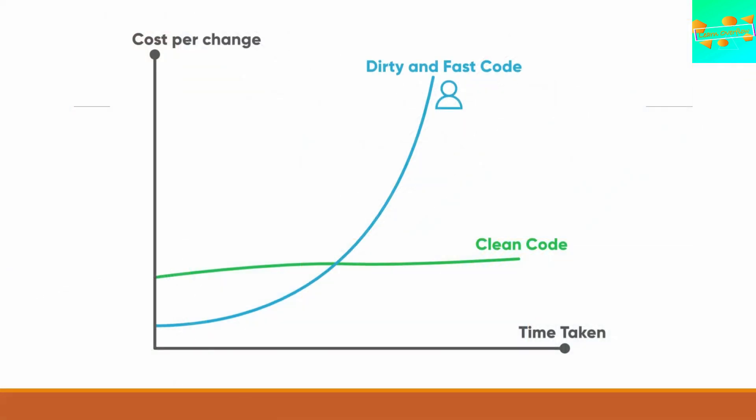As a software engineer or software developer, you are expected to write good software. If the code is easy to understand and easy to change, then it is definitely good software that developers love to work on. Here is a small diagram — look at the cost required to make changes in the software and the time taken to make those changes. If your code is dirty, the more changes you make, the more time it takes and the more costly it becomes. But if it's clean code, it almost takes constant time to make changes. That's the reason for writing clean code.